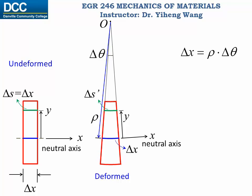For delta s prime, its radius of curvature is rho minus y, and the length of the arc is rho minus y multiplied by delta theta.